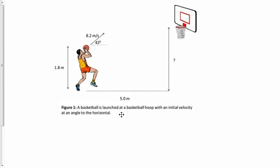A basketball is launched towards a basketball hoop and our job is to find how high the hoop is. We're starting with an initial height of 1.8 meters, launched at 8.2 meters per second at a 42 degree angle.